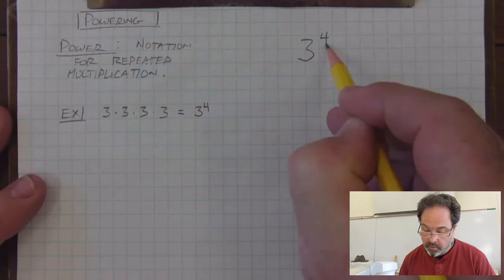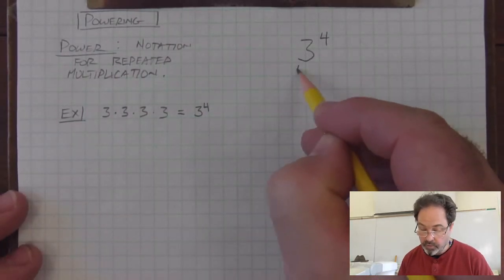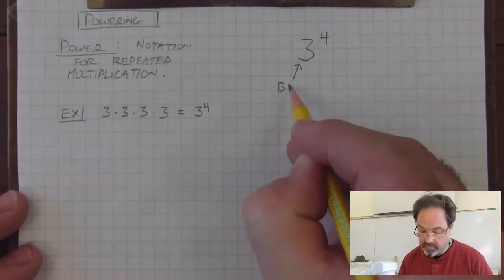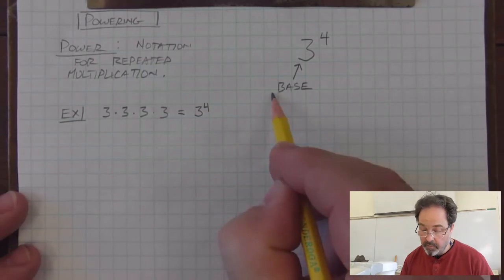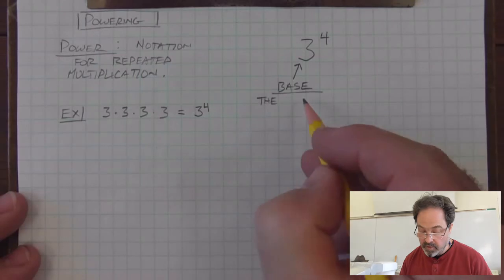A power has two parts to it. The larger number, we call the base. The base is the number that is multiplied.